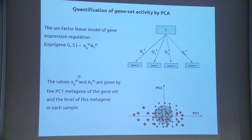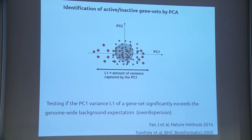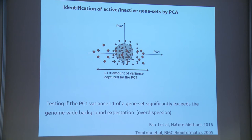The second vector gives us the level of this metagene across different samples. So the large matrix of many genes is approximated by two vectors: the coefficients defining the metagene and the weights representing the metagene level in our samples. This model allows us to identify what is an over-dispersed gene set — a concept from recent literature — where we define which gene set expresses excessive variance compared to the background, meaning some gene sets show high variability compared to random gene sets.